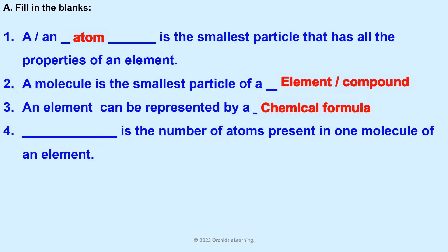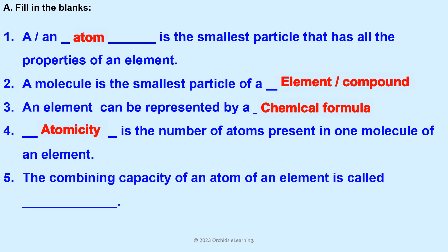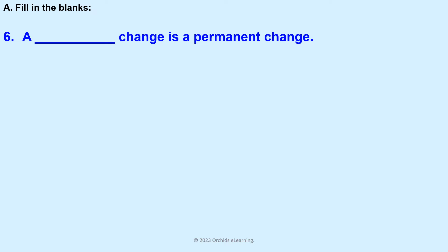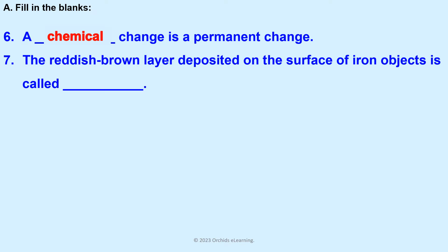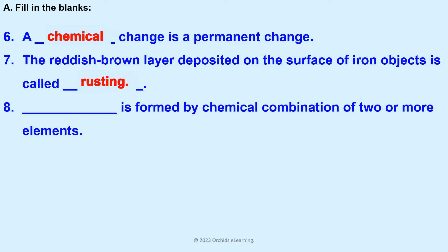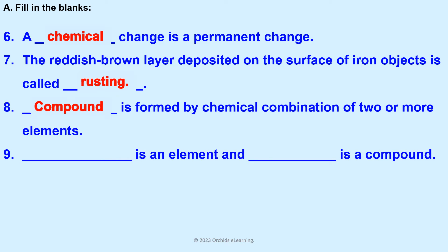Atomicity is the number of atoms present in one molecule of an element. The combining capacity of an atom of an element is called valency. A chemical change is a permanent change. The reddish brown layer deposited on the surface of iron objects is called rusting, formed by chemical combination of two or more elements.